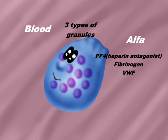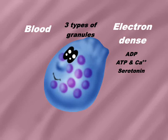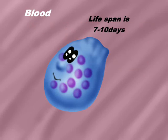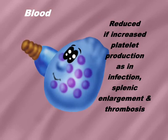Alpha granules contain platelet factor 4 (a heparin antagonist), fibrinogen, and von Willebrand factor. Electron dense granules contain adenosine diphosphate (ADP), adenosine triphosphate (ATP), calcium, and serotonin. The lifespan of a platelet is 7 to 10 days, but is reduced with increased platelet production, as seen in infection, splenic enlargement, and thrombosis.